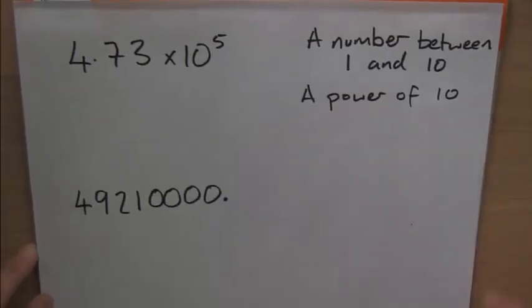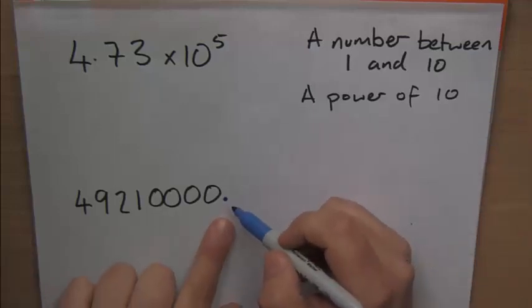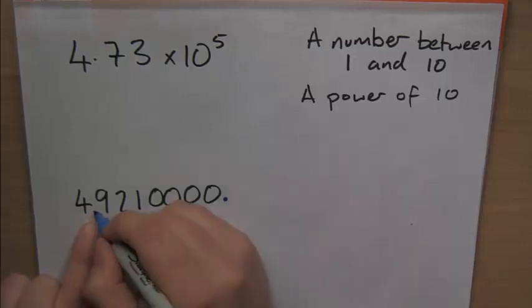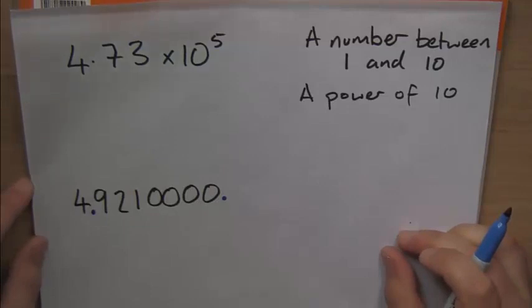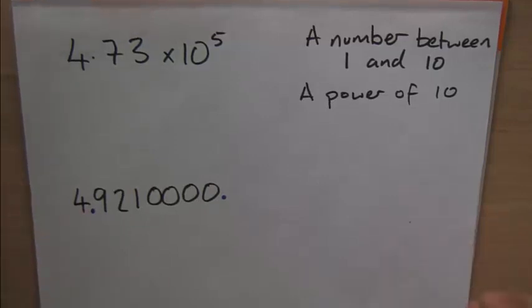Now we need, for it to be standard form, a number between 1 and 10. And this decimal point is going to have to move, so it is between the 4 and 9. That then makes this number between 1 and 10, it makes it 4 point something.